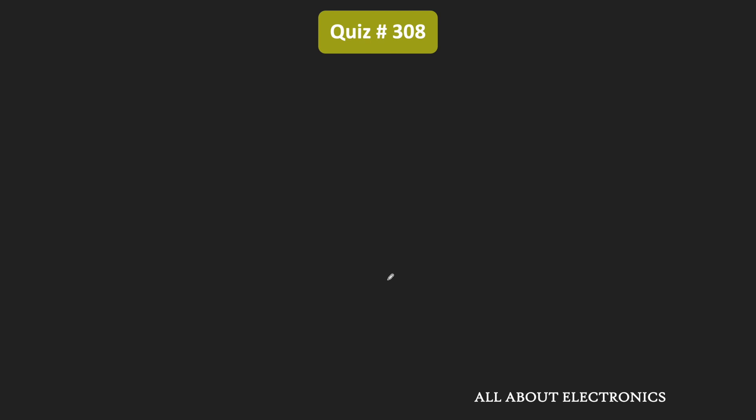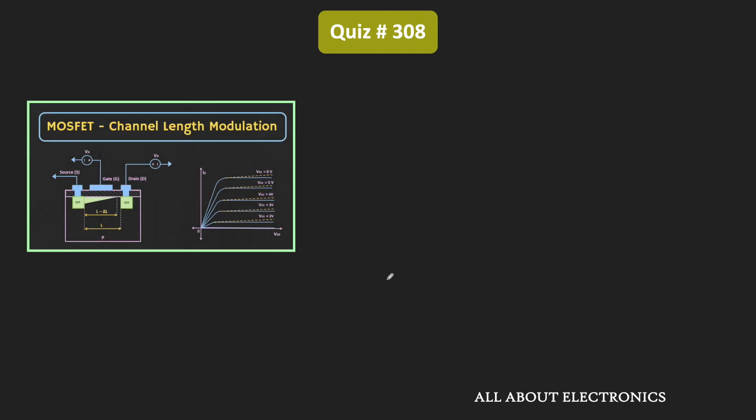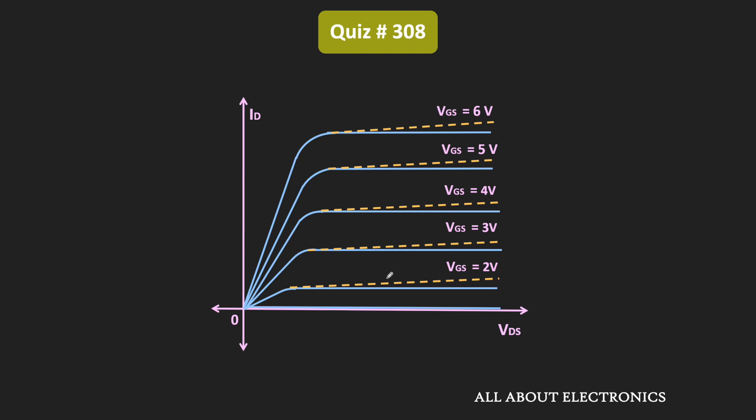So if you have followed the previous video on the main channel, then we have already discussed about the channel length modulation. And in that video, we have seen that for the fixed value of the voltage Vgs, the drain current Id is also a function of voltage Vds. That means as we increase the voltage Vds, then the drain current Id also changes.